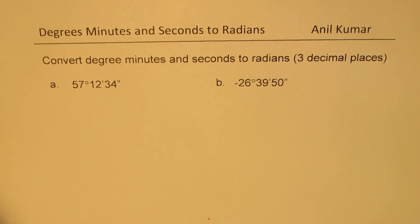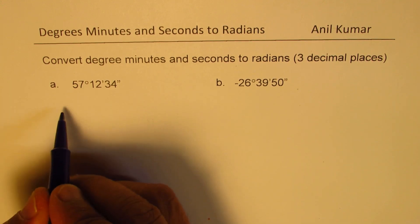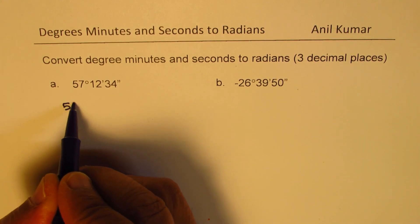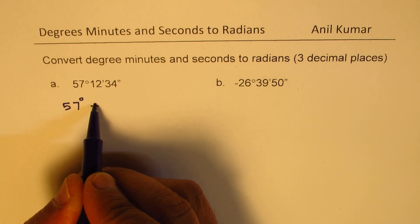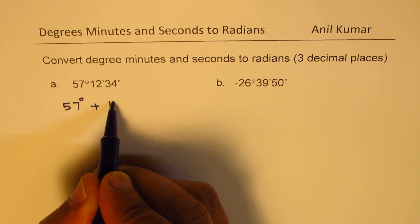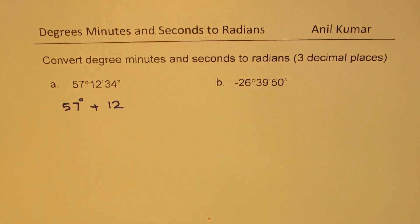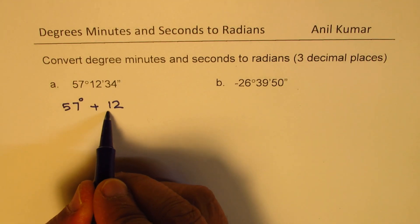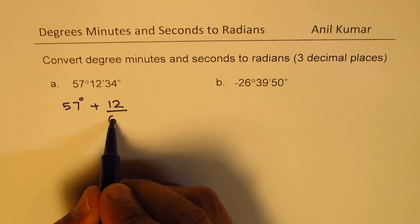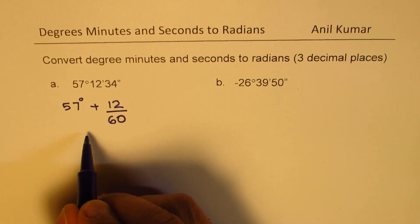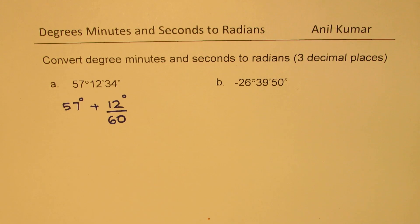Let's look into the conversion factors. The number here is 57 which is degrees. Plus we have 12 minutes. Now if I have to convert 12 minutes to degrees, what should I do? I have to divide this by 60.